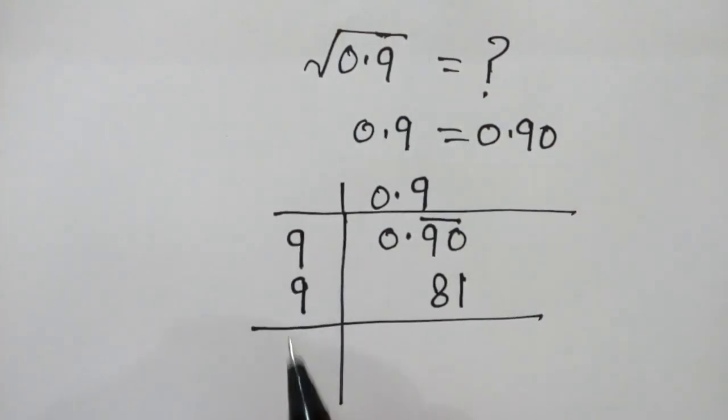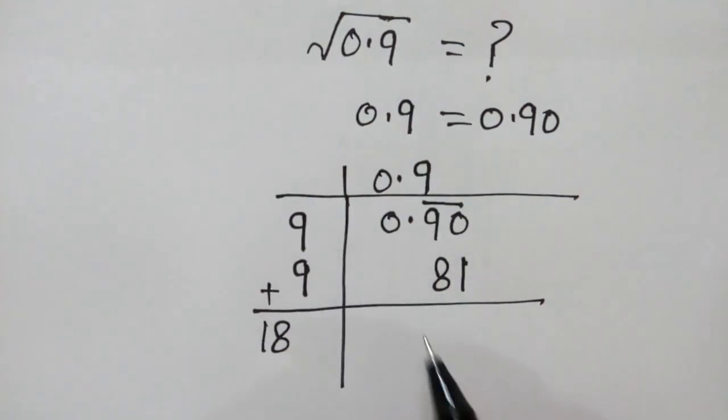So now, what will we do? 9 and 9 added is 18. And here we write 9.